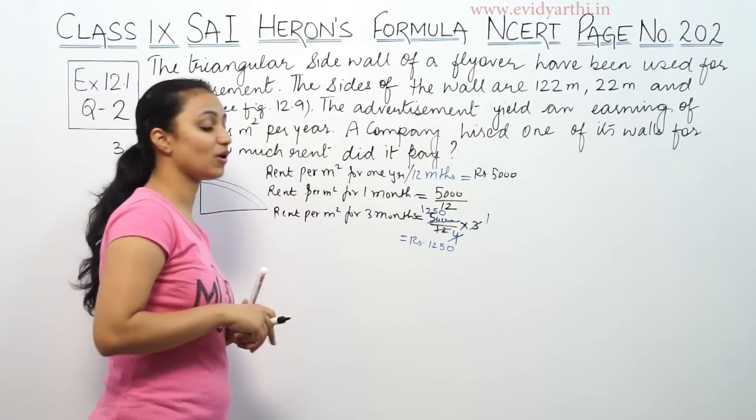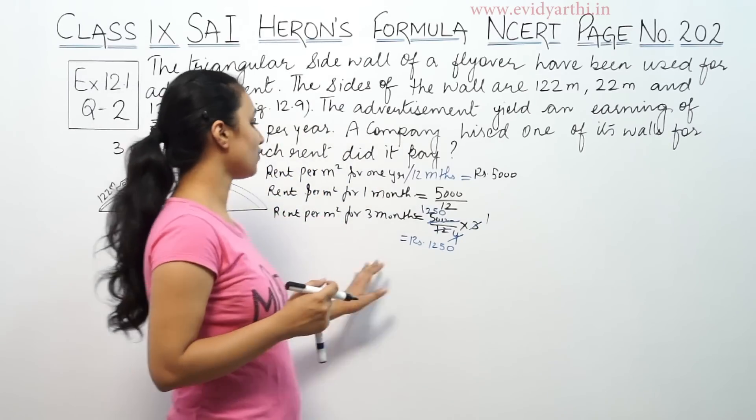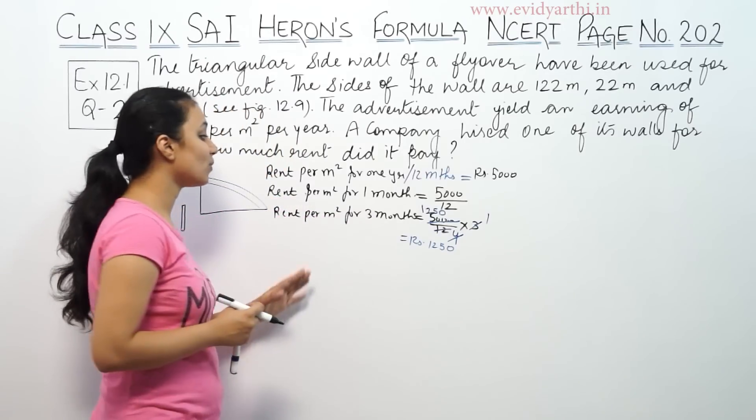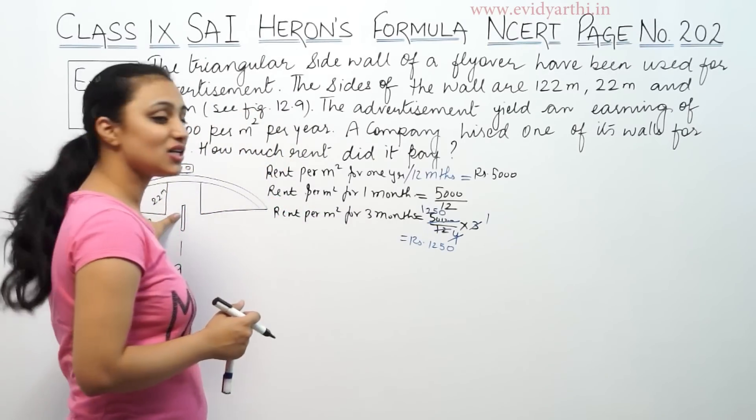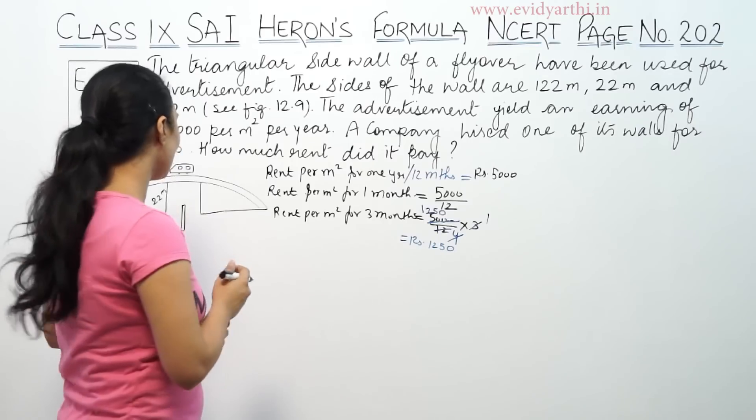This rent will be for 3 months, 1250. This is for 1 square meter for 3 months. Then the rent will depend on the area. So we will find the area.